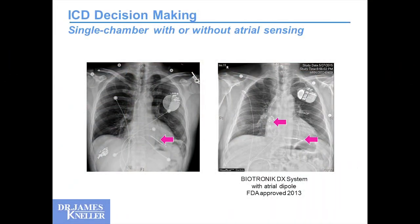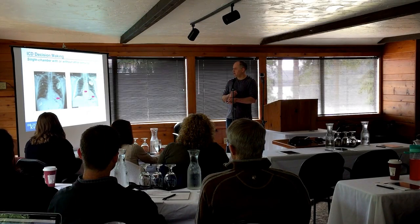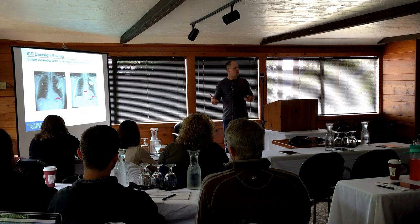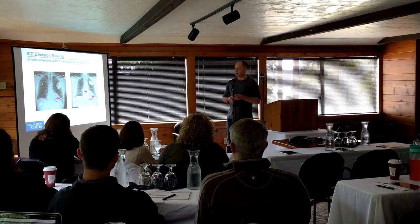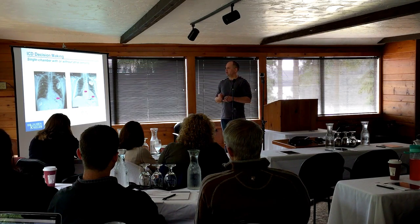Now we have an option for a single-chamber device with or without atrial sensing. The traditional device just has a single lead in the ventricle for defibrillation. Here we'll talk about the Biotronik DX system, which puts an atrial dipole in the top chamber. There's a sensing mechanism in the atria that gives us atrial electrograms. You can't pace from that dipole, but you can understand what's happening in the atrial chamber. This seems like a nice improvement — I'll have that diagnostic capability when I feel constrained to implant the single-chamber ICD. This has been available in the United States since 2013.